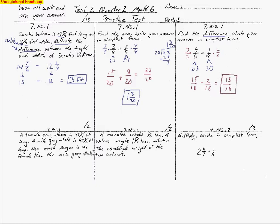The next problem: a female gray whale is 45 and a quarter feet; the male is only 43 and a half feet. Interesting that the male is a little smaller than the female — typically it doesn't work that way, but in this case it does. It asks how much longer is the female than the male, so we're subtracting. Since they're mixed numbers, I'll write them in column format: 45 and a quarter minus 43 and one half.